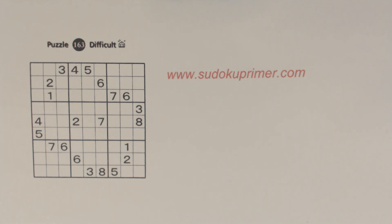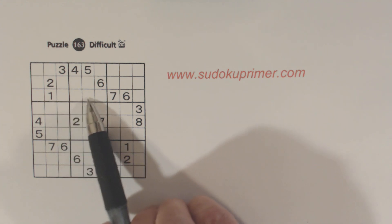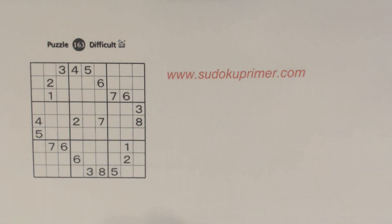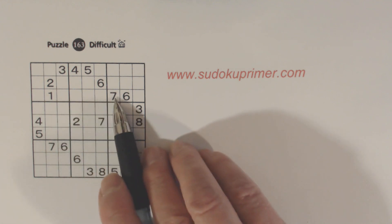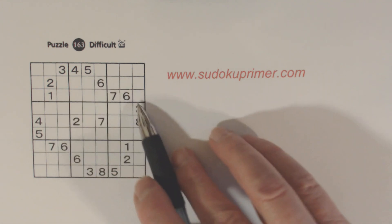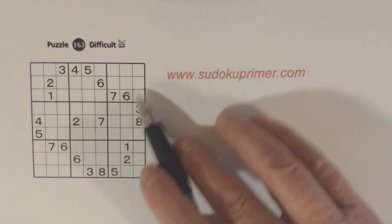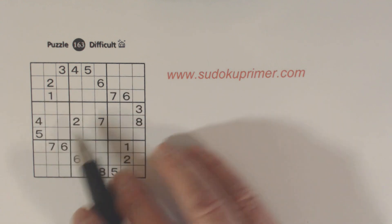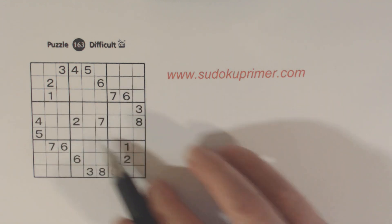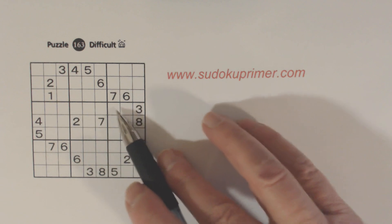We're going to go through all the numbers one through nine and look for ghost numbers. I'll explain what ghost numbers are and how you find them and then how you can use them to find numbers. We'll start with one. One can go anywhere in box five.